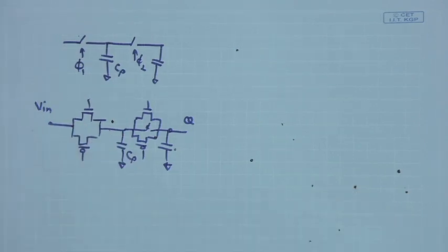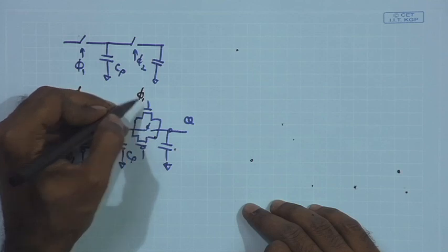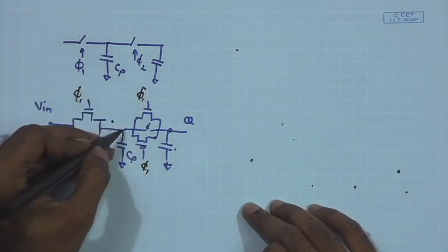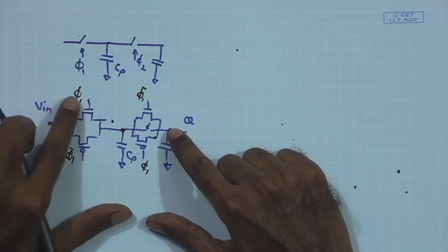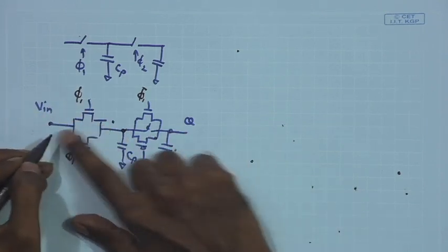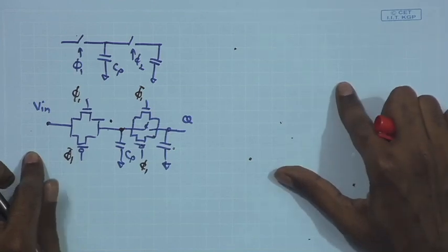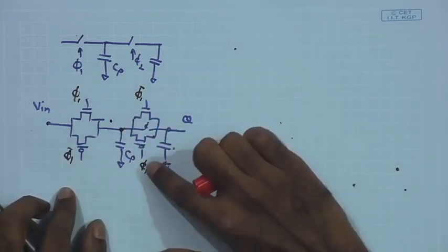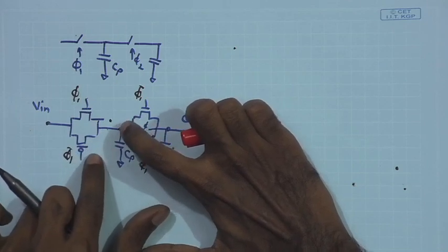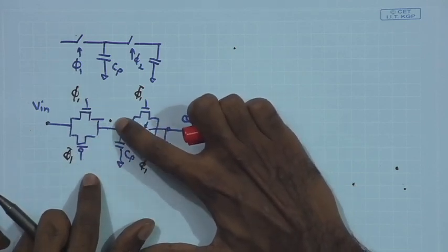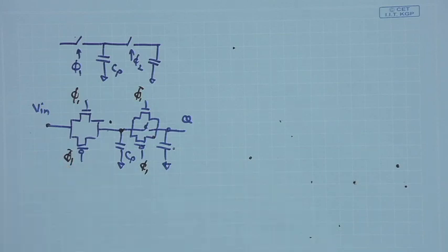During the positive phase of the clock, phi one is high. TG one is transparent and TG two is off, so the input data is sampled at node Cp. When the opposite phase is on — phi one is low and phi one bar is high — TG two turns on and TG one turns off. As a result, the data value stored at Cp is transferred to the output capacitor. This is a possible simple implementation.